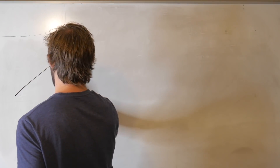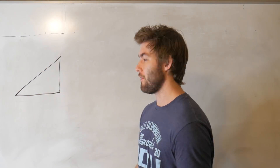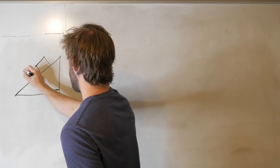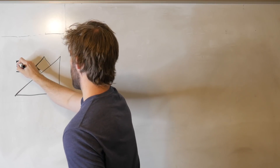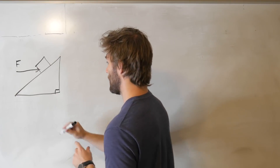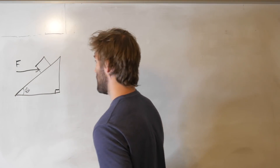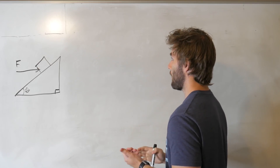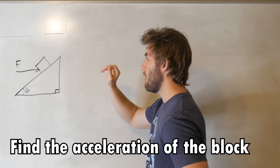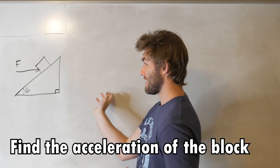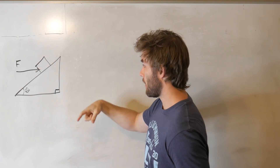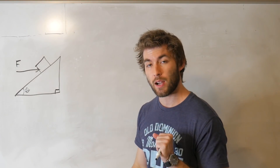Today we are going to be solving the problem where we have some inclined plane. We're going to have a little block on here with some mass. We're going to be pushing on this block with some applied force, and there's also going to be some friction between the block and the plane. This is elevated by some angle theta. What we're actually solving here is the acceleration of the block — taking into account the elevation, the applied force, and friction. Is the block going to accelerate downwards or go upwards? That's what we're going to find out today.